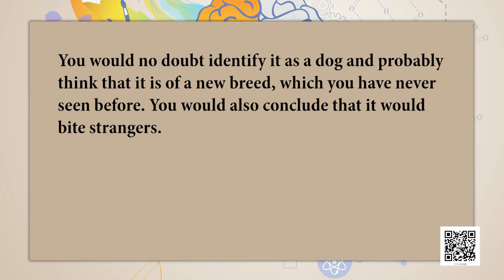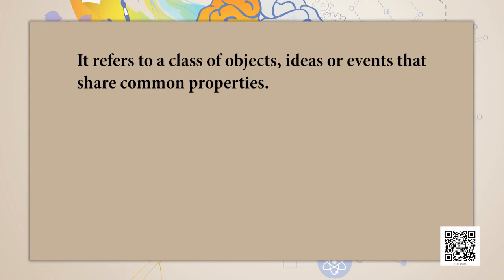For example, while walking on the road you come across an unfamiliar quadruped of a very small size with a face like a dog, wagging its tail and barking at strangers. You would no doubt identify it as a dog and probably think it is of a new breed you have never seen before, and also conclude that it would bite strangers. A concept thus is a mental representation of a category — it refers to a class of objects, ideas or events that share common properties.